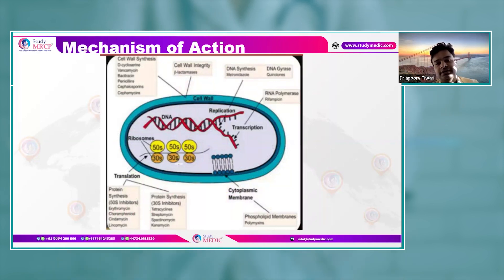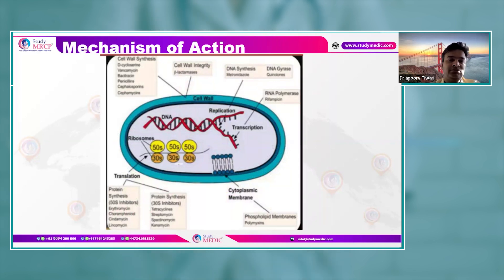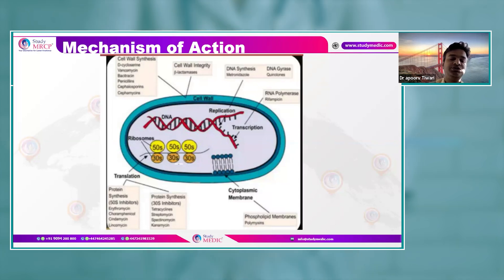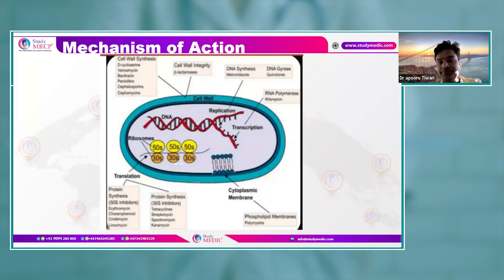This slide will give you at least one question in every Part 1 diet pertaining to antibiotic mechanisms. D-cycloserine, vancomycin, bacitracin, penicillin, cephalosporins, and cephamycins inhibit cell wall synthesis, whereas beta-lactamase inhibitors inhibit cell wall integrity — examples include amoxicillin-clavulanate, piperacillin-tazobactam, imipenem-cilastatin, and sulbactam combinations.